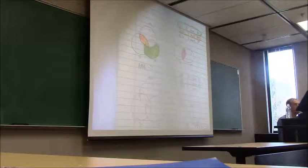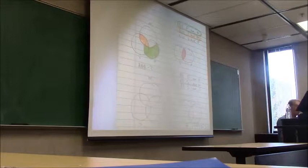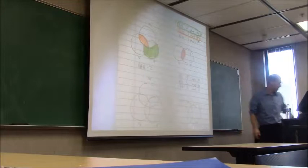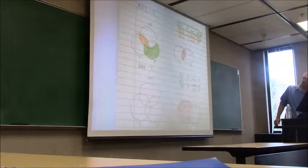What do we diagram first? The conclusion. Are we shading or putting an X? Shading, because it's universal. Where do we shade — left moon, cat's eye, or right moon? Left moon. Why? Because it's 'All S are P' — so the part of S that is not in P is empty.